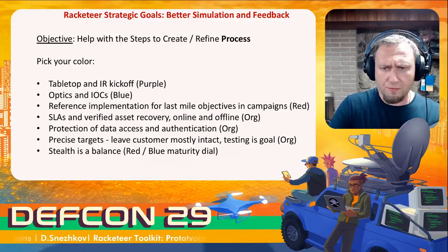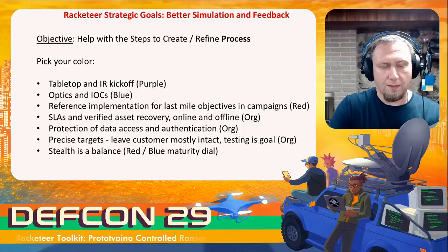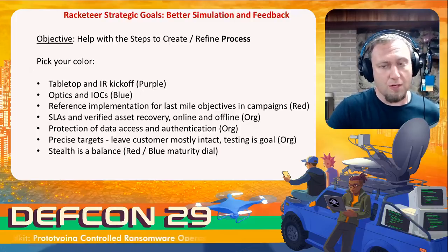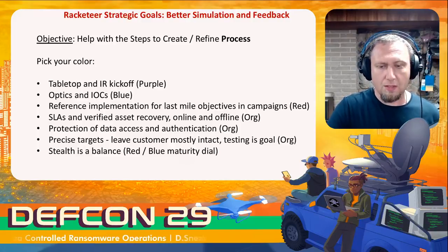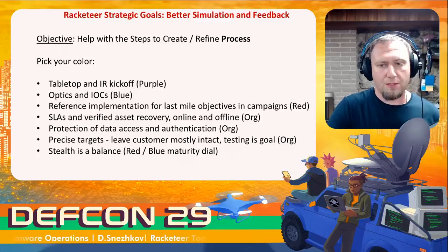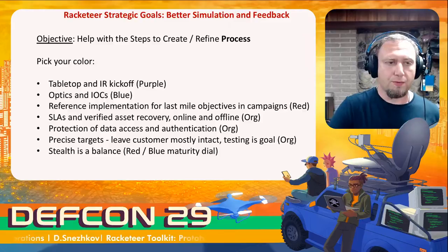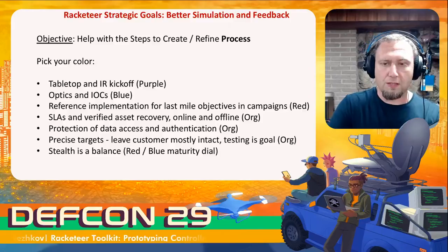For us as testers, we have to abide by SLAs and it's good practice to keep the network intact and not cause denial of service. This is why we're calling our toolkit a controlled prototype of ransomware — a controlled run where we have precise targets and a balance of stealth and openness, so you can both showcase the capability and open it up to defenders to inspect things.